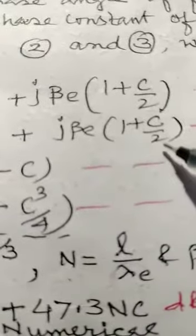Gamma 1 is equal to minus beta_e times c times square root of 3 by 2, plus j times beta_e times (1 plus c by 2). Gamma 2 is equal to plus beta_e times c times square root of 3 by 2, plus j times beta_e times (1 plus c by 2). Gamma 3 is equal to j times beta_e times (1 minus c). Gamma 4 is equal to minus j times beta_e times (1 minus c cubed divided by 4).